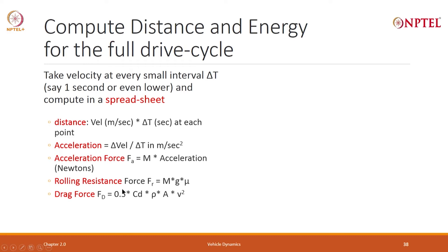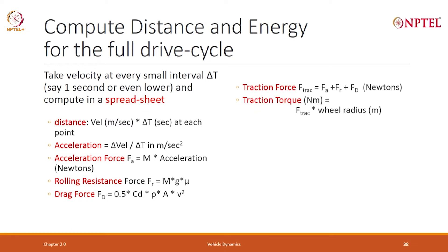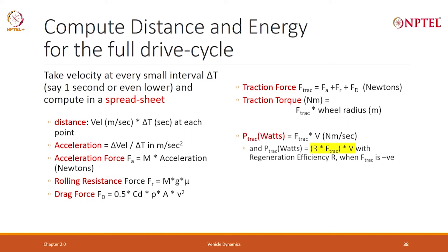Once you have computed acceleration force, rolling resistance, and drag, you compute the total traction force. You also compute the traction torque as traction force × wheel radius — so every second you know the required torque. Power consumed is traction force × average velocity, giving power in kilowatts every second.